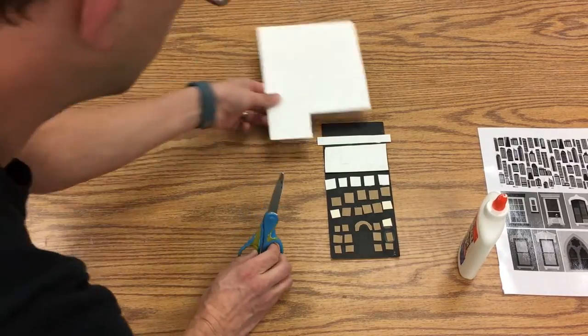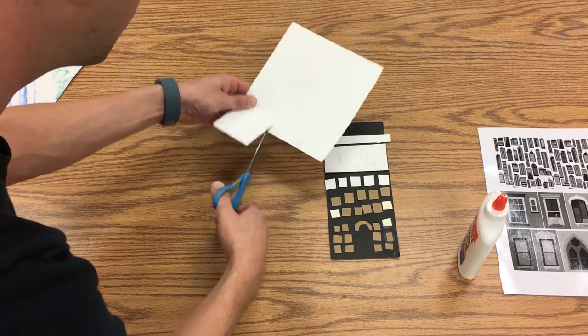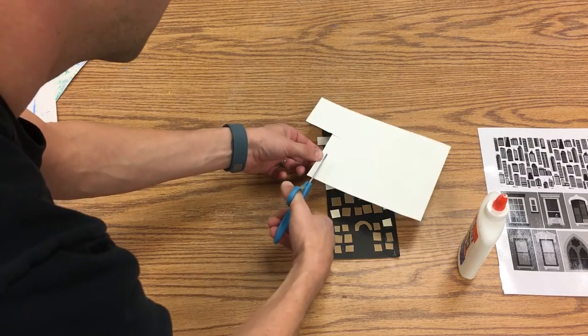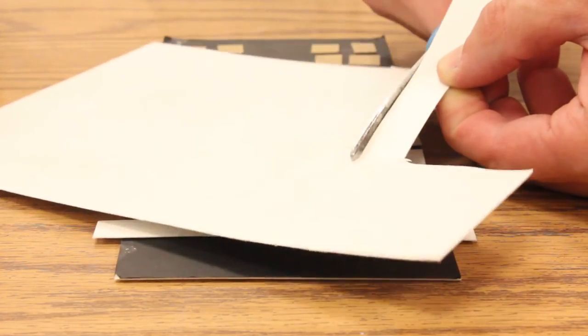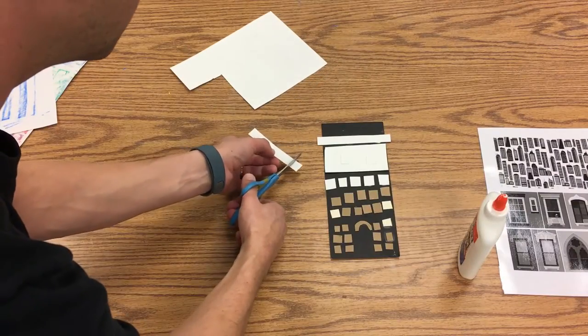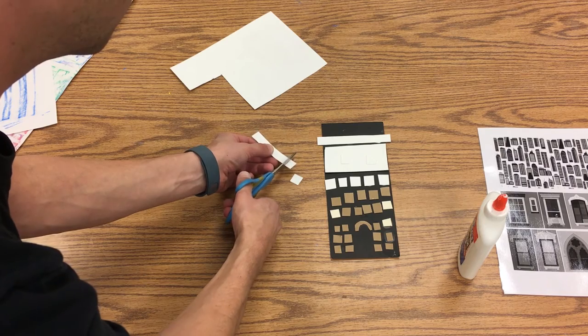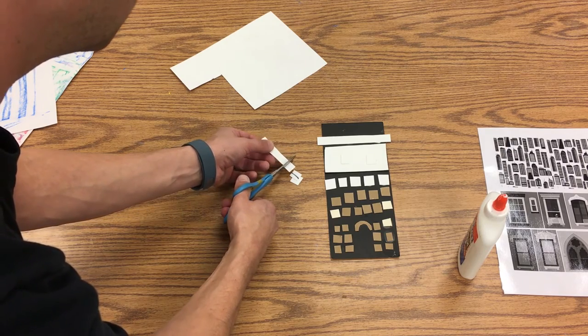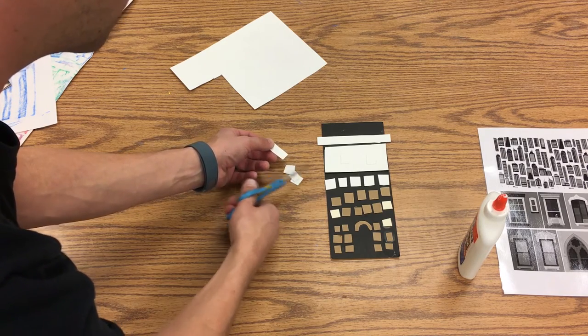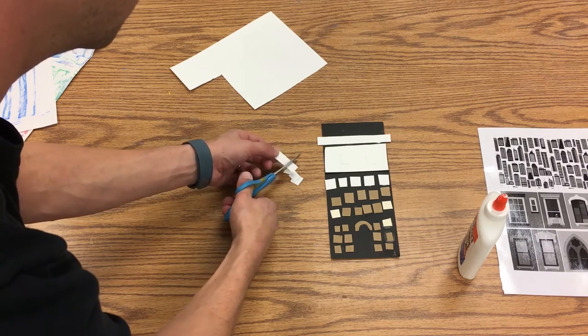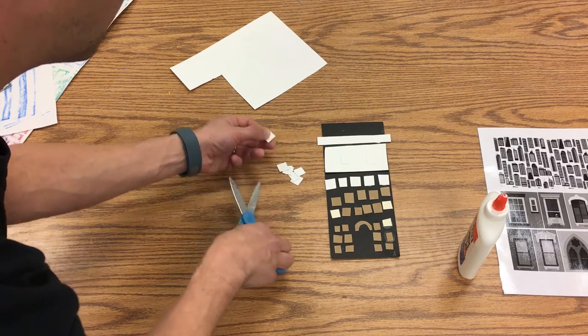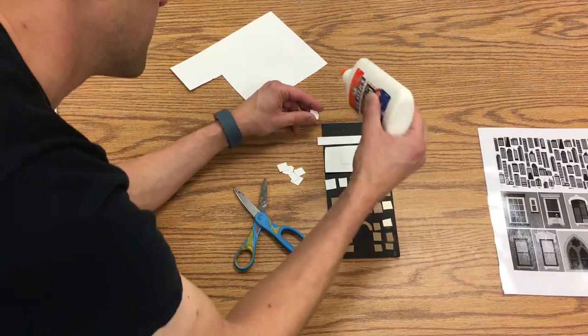And finally just some more little windows on top. Same method here where I cut a long rectangle and then cut little windows like so. It doesn't matter if the color is different because when we do the rubbing, the paper will cover that up and you won't even notice.